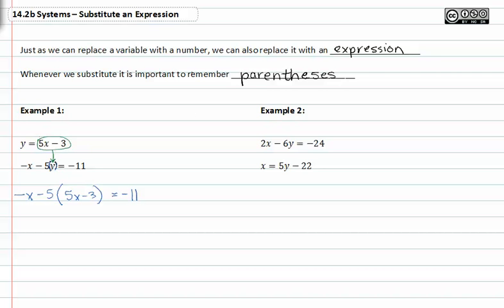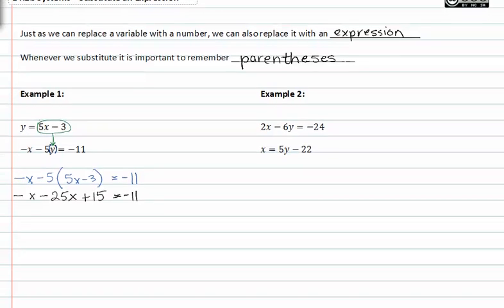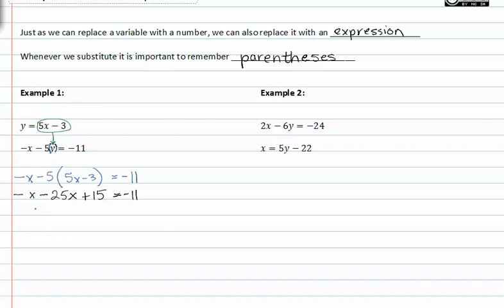From here, we simply distribute and solve for x. Adding like terms, we get negative twenty-six x plus fifteen is equal to negative eleven.